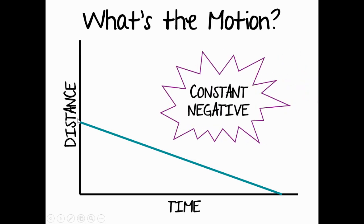This type of line is called a constant negative line because this line is moving down the y-axis, back towards your x-axis — home. And because it is a straight line, it is constant motion. So: constant negative, moving down the y-axis.